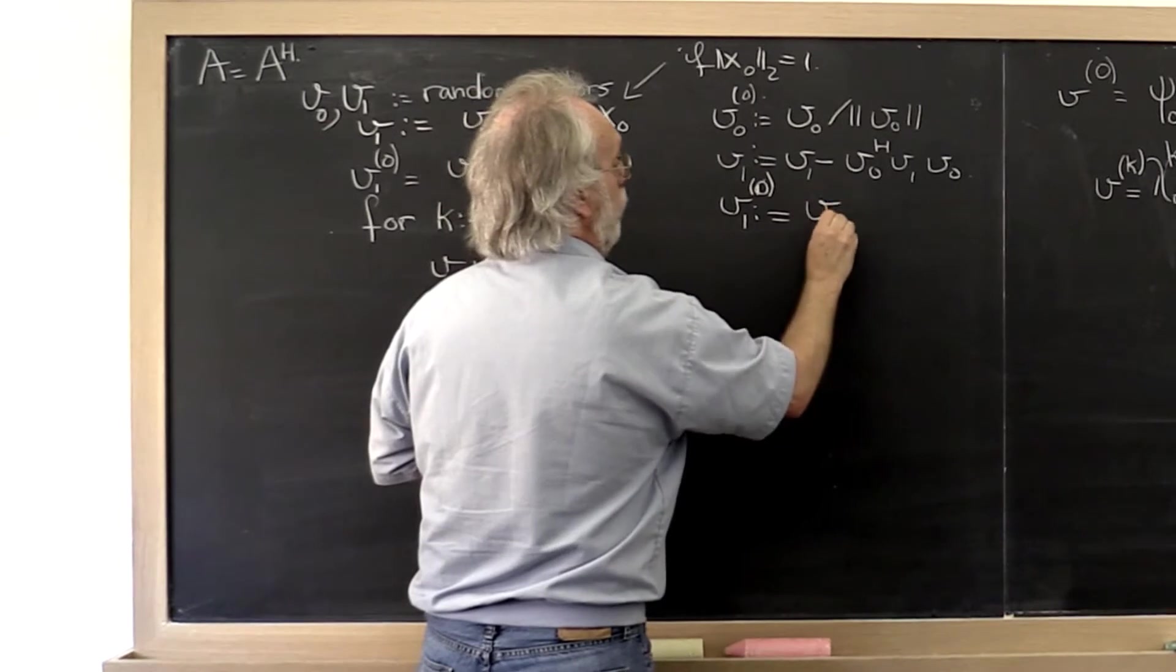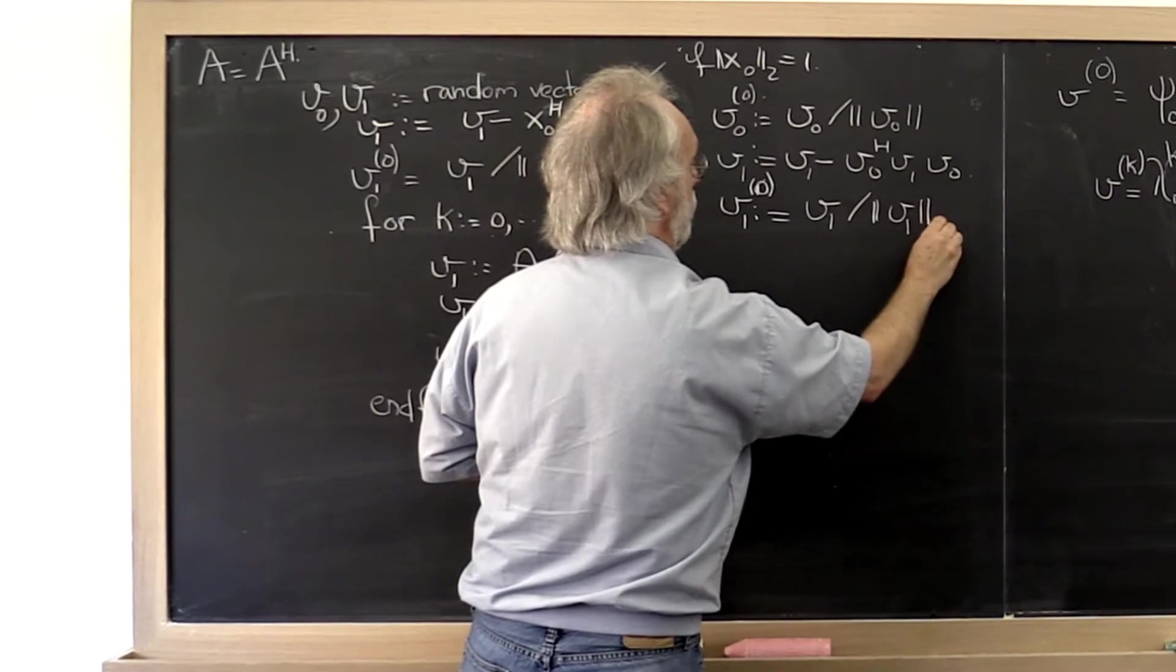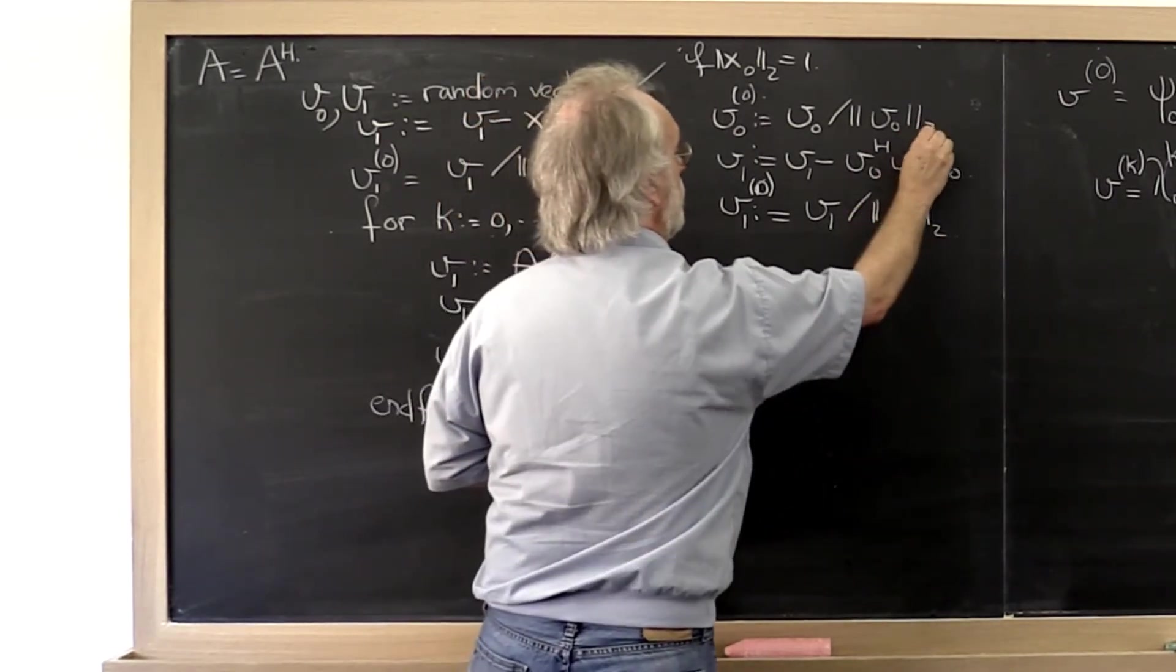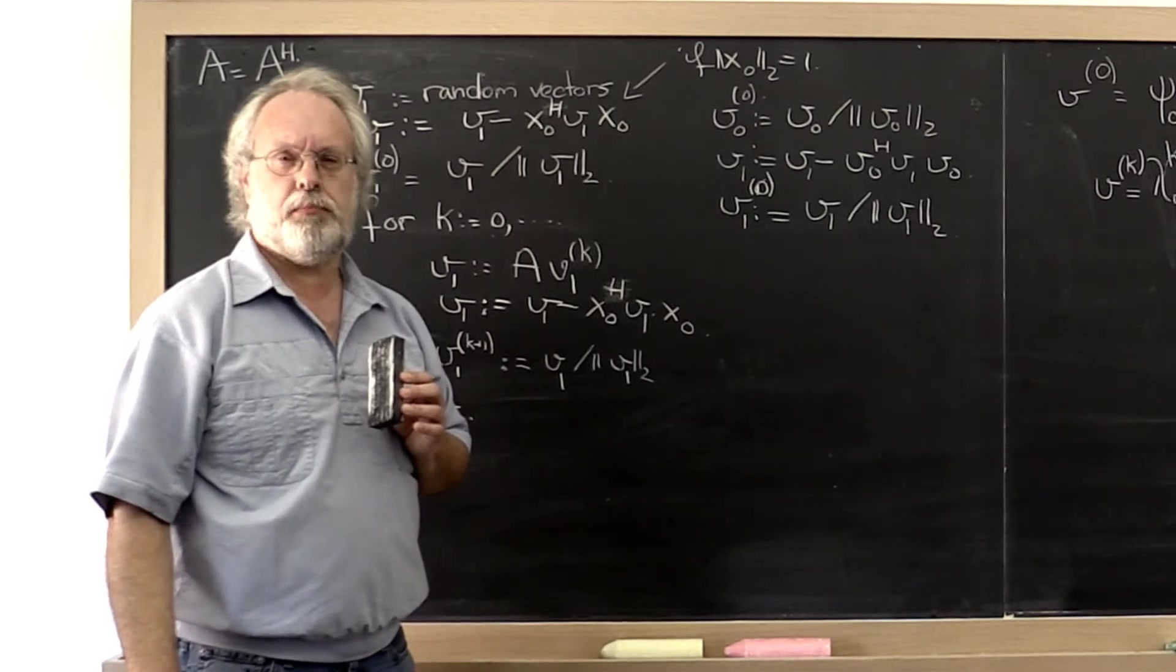And then let's take our first iteration v1,0, to be v1 divided by the norm of v1, q-norm. Where have we seen that before?